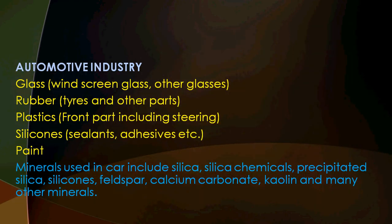In the automotive industry, there are many different types of glass in a car — the windshield and side windows are all different qualities. Rubber is used in tires and other parts, and plastics are used in the front part including the steering. Automotive industry needs glass, plastic, rubber, sealants, and adhesives — all made from industrial minerals.